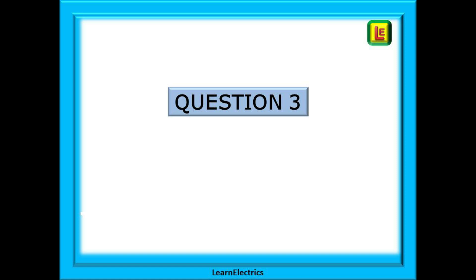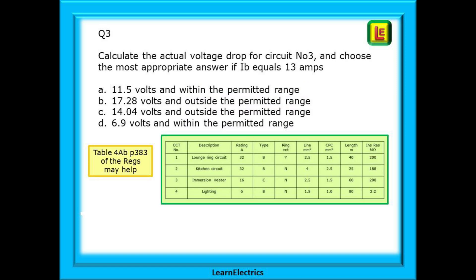Question 3 is next. Now we must calculate the actual voltage drop for circuit number 3 and choose the most appropriate answer. We are told that IB the design current is 13 amps and we should use this in the calculation. Again pause the video and work out the answer.